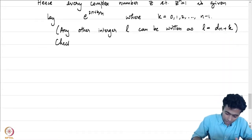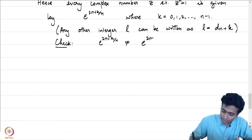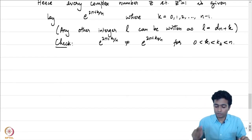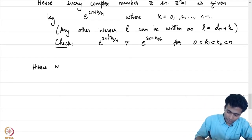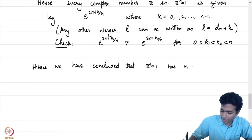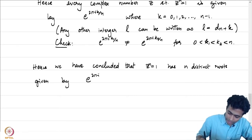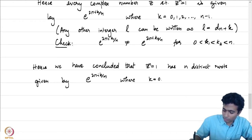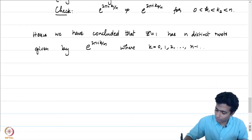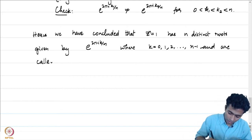I will leave it as a check for you to establish that e^{2πik₁/n} ≠ e^{2πik₂/n} for 0 ≤ k₁ < k₂ < n — for two different such integers, they will be distinct elements. Hence we have concluded that z^n = 1 has exactly n distinct roots given by e^{2πik/n} where k ranges from 0 to n−1. These are called the nth roots of unity.